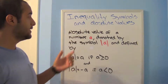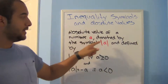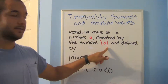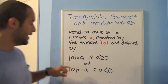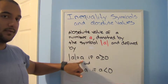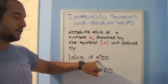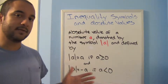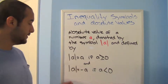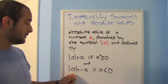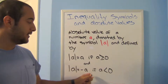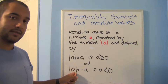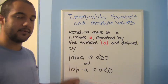The absolute value of a number a is denoted by the symbol |a| and defined by two rules: the absolute value of a equals a if a is greater than zero — meaning if a is positive, it stays the same. The absolute value of a equals negative a if a is less than zero — meaning if a is negative, you take the opposite of whatever is inside.